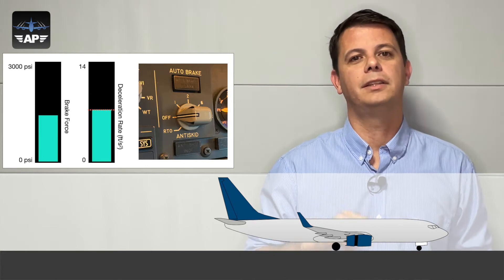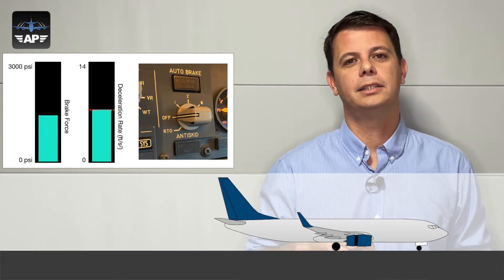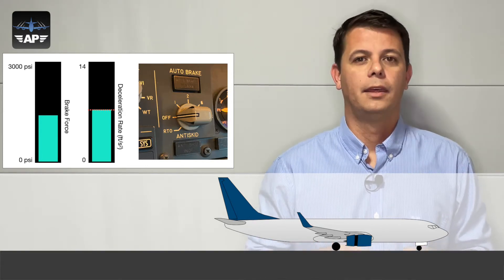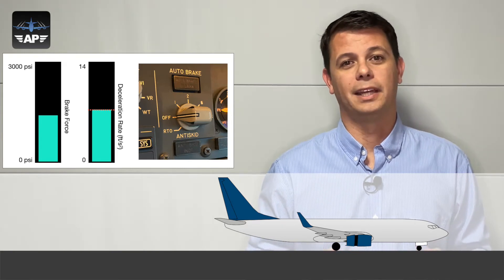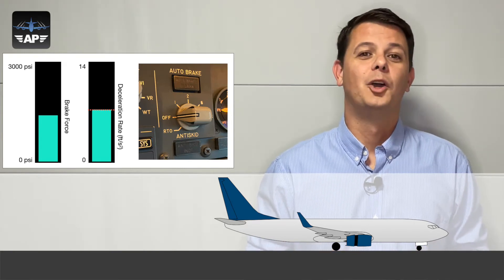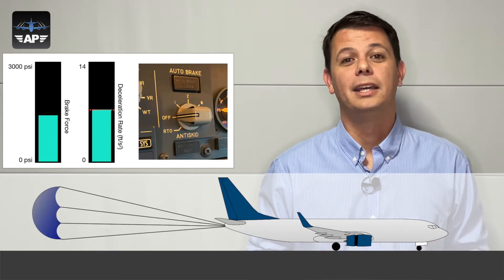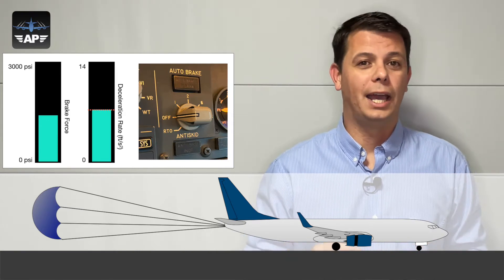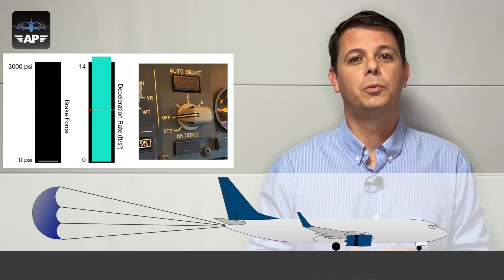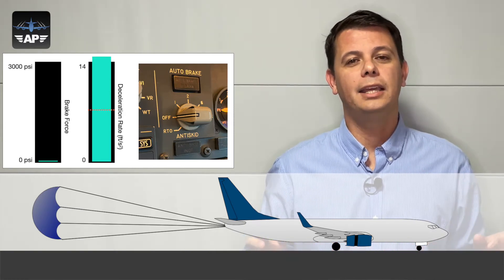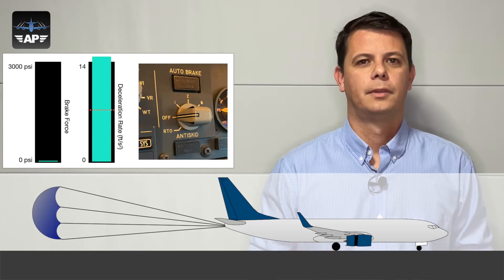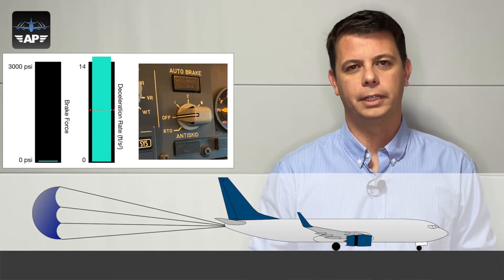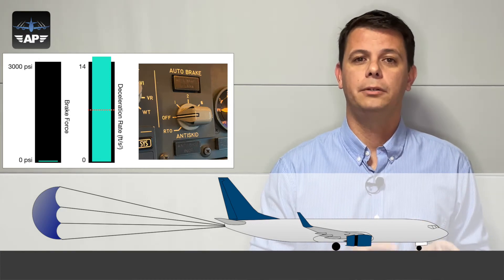This brings it back to the seven knots per second target it was programmed to achieve. If, for instance, this airplane had a parachute, once the parachute was deployed the deceleration rate would be so high that the system would release any pressure from the braking line. But before jumping to any conclusions, let's go into a real airplane example.